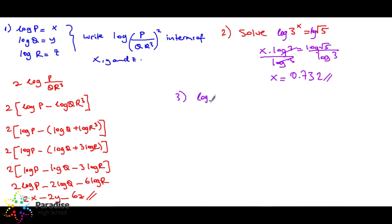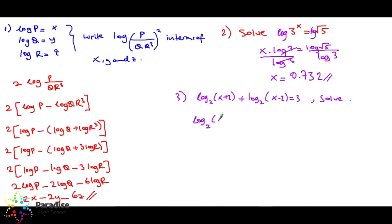Question number three: logarithm base 2 of (x plus 2) plus logarithm base 2 of (x minus 2) equals three. Solve. There are two logarithms with the same base and addition in between, so I can contract them: logarithm base 2 of (x plus 2)(x minus 2) equals three.